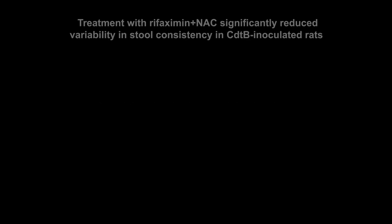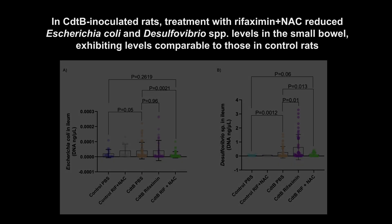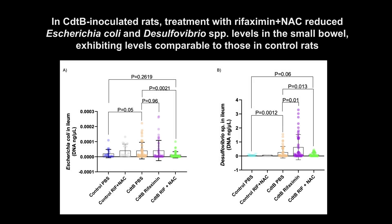These are the key findings from the study. Treatment with Rifaximin plus NAC significantly reduced variability in stool consistency in CDTB-inoculated rats. In CDTB-inoculated rats, treatment with Rifaximin plus NAC reduced Escherichia coli and Desulfovibrio species levels in the small bowel, exhibiting levels comparable to those in control rats.